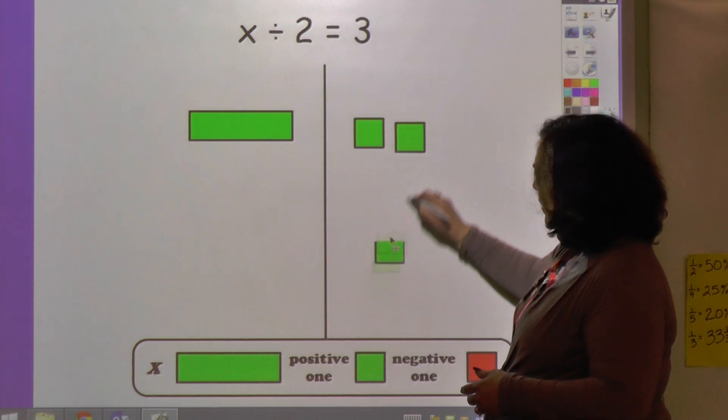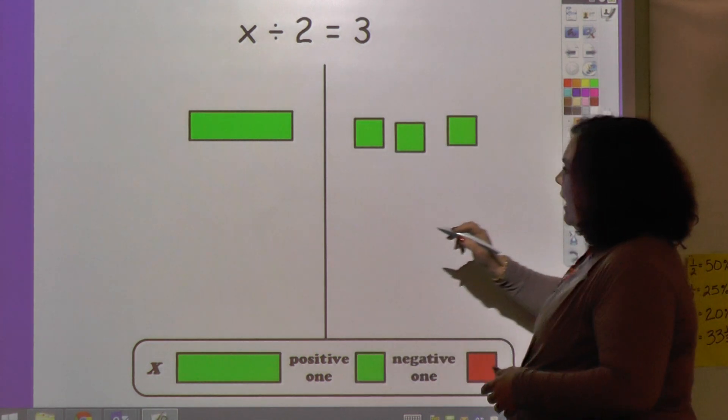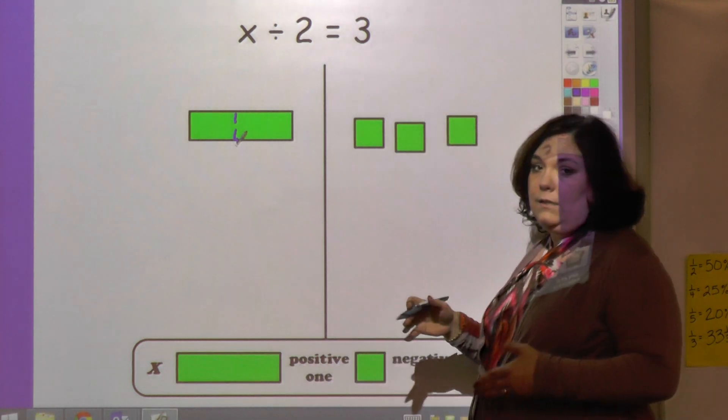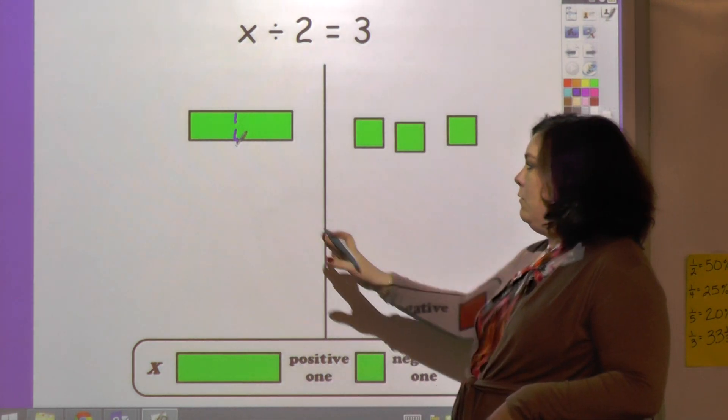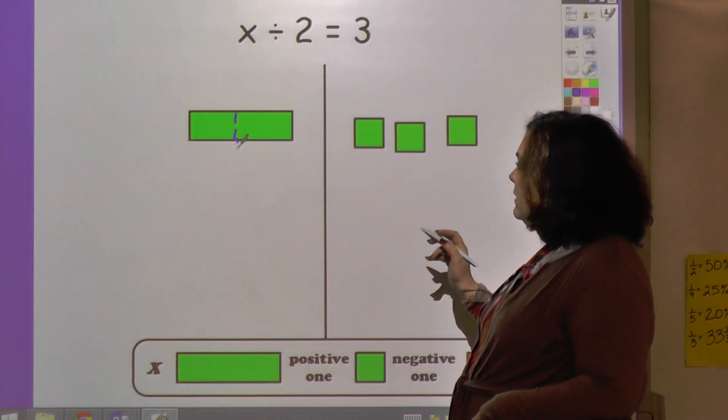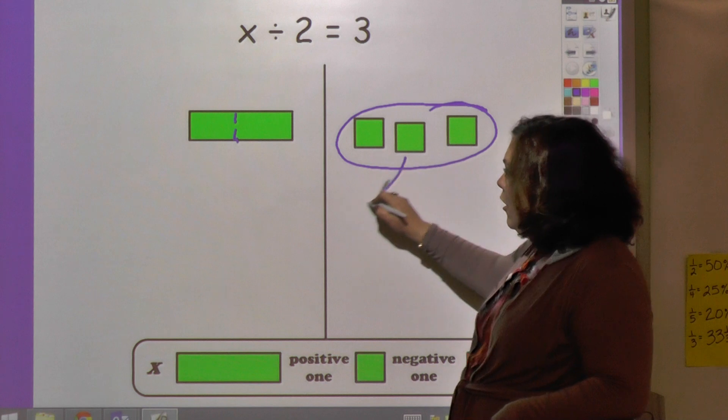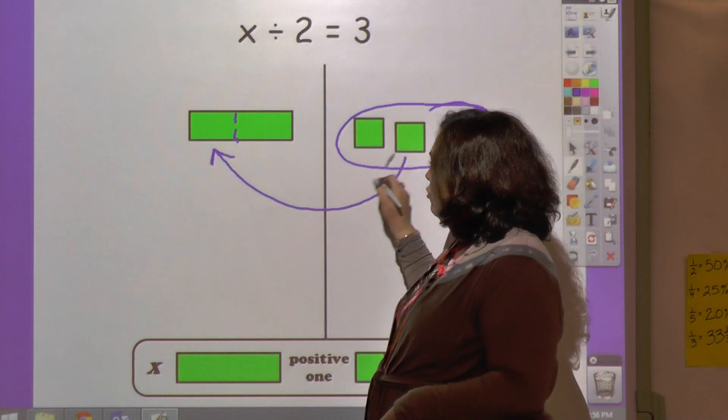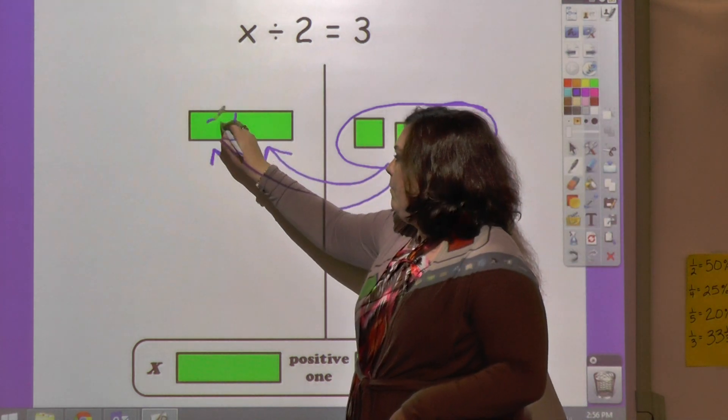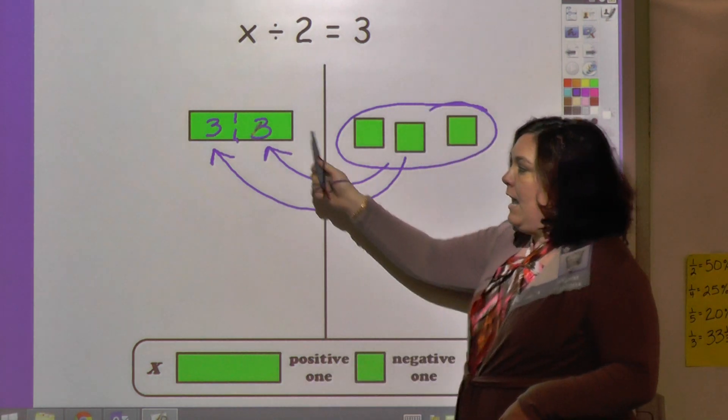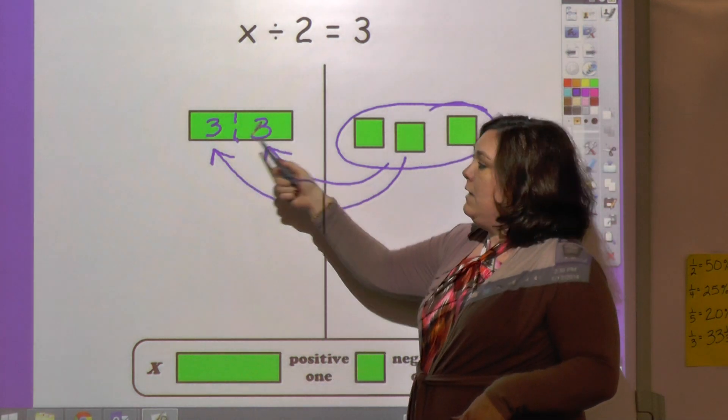Now it is divided by 2. I've shown I've divided it by 2. So this says that these 3 go into each one of these. So this would be positive 3 and positive 3. So my answer, I would add that up for the whole x, and that equals 6.